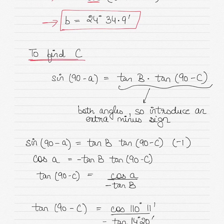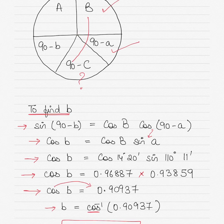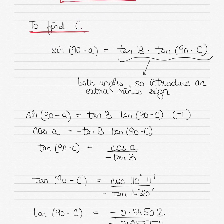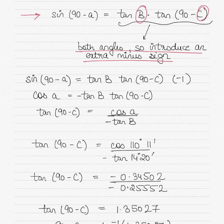To find angle C, return to the Napier's circle. The equation must involve the three relevant parts: angle B, 90−A, and 90−C. So the equation is sin(90−A) equals tan(angle B) · tan(90−C). Because both terms on the right-hand side are angles, you introduce an extra negative sign, making it sin(90−A) equals −tan(B) · tan(90−C).